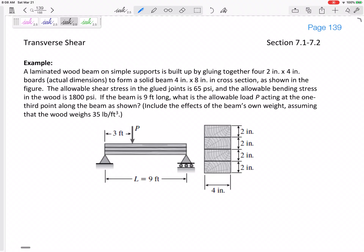All right, let's look at this one. This is a good one. So a laminated wood beam on simple supports, pin and roller, is built by gluing together four two by four inch boards, actual dimensions, to form a solid four by eight.